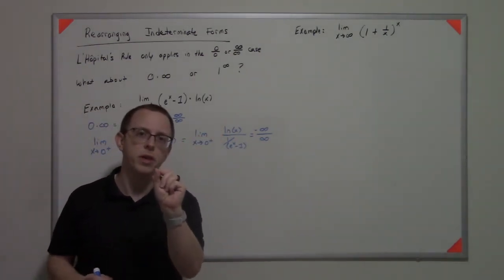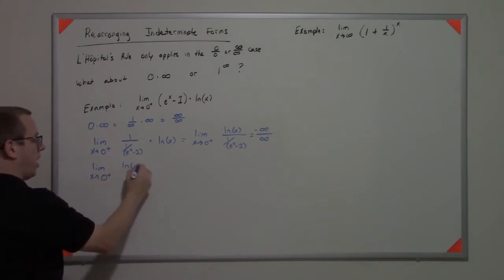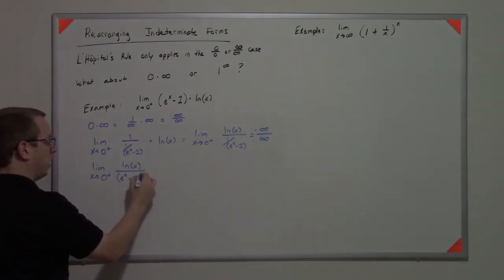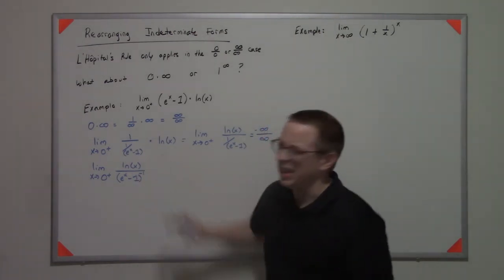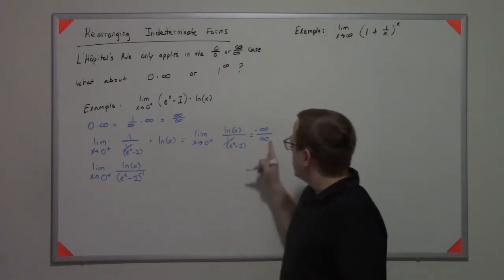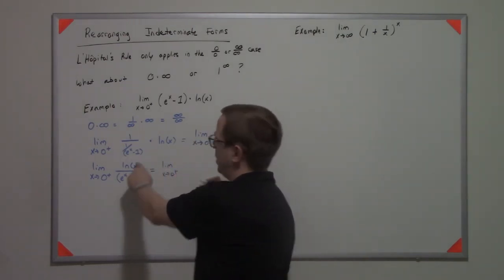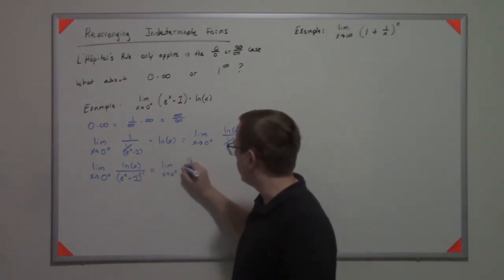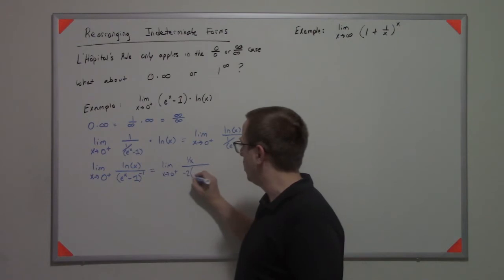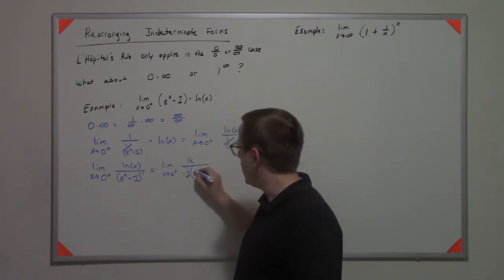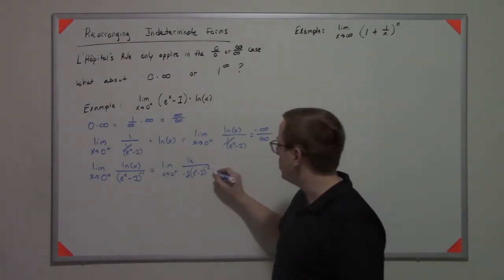I want to do one more thing first: rewrite this as natural log of x times (e^x - 1) to the negative 1, which is just cleaner. L'Hôpital's rule says, since we have an infinity over infinity case, this limit equals the limit of the derivative of the top — which is 1 over x — divided by the derivative of the bottom, which is negative 1 times (e^x - 1) to the negative 2 times e^x.